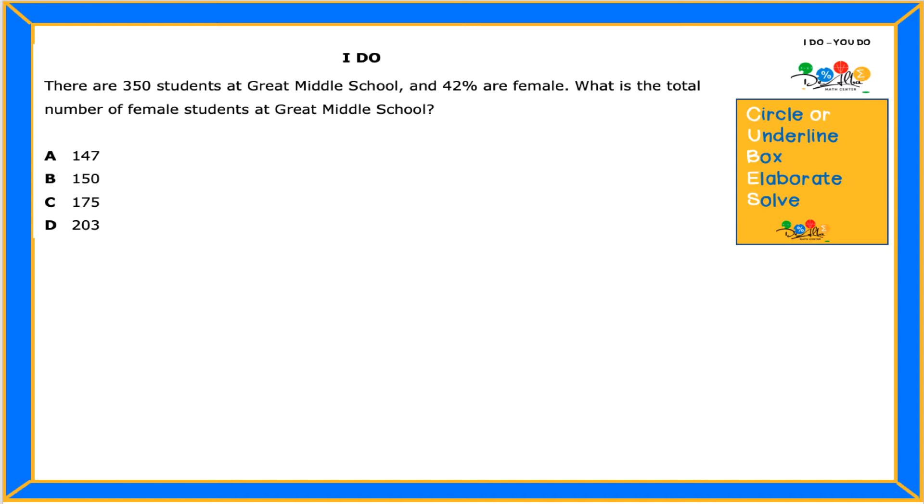Let's get started by following the problem-solving strategy on the right side. We're gonna circle or underline, in our case we do highlight. In my first sentence, I know it is important to say 350 students. So looks like those are all the students they have. Also, they said 42% are female. What is the total number of female students at Great Middle School? So now they want to know the total number, not percent, number of female students.